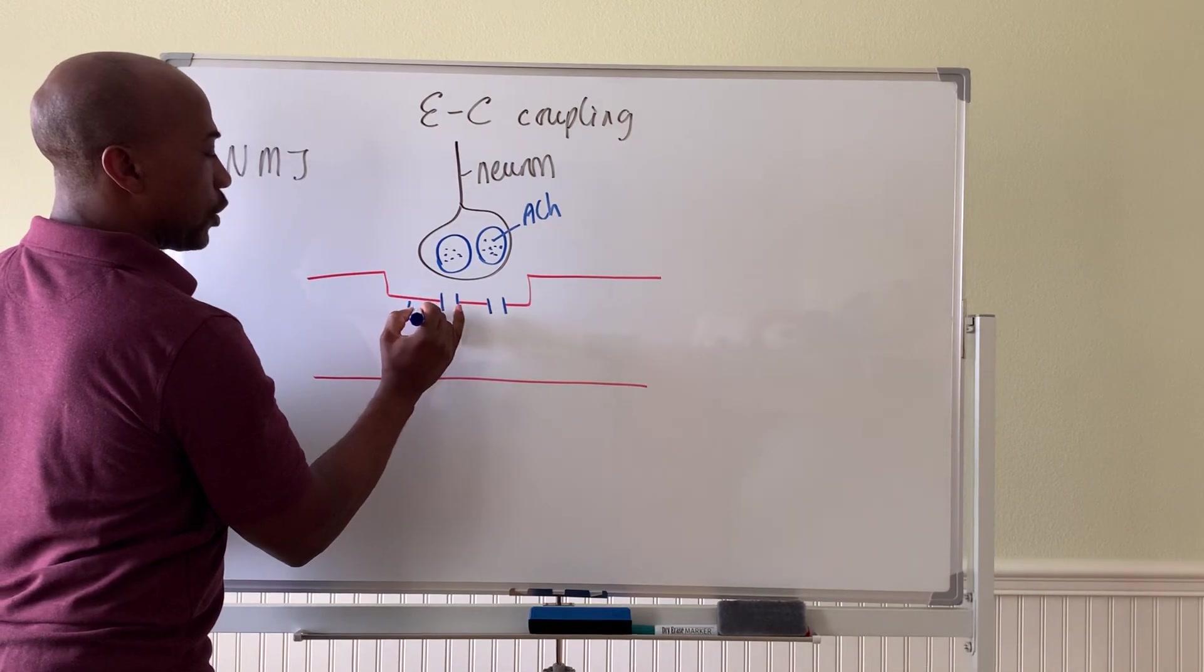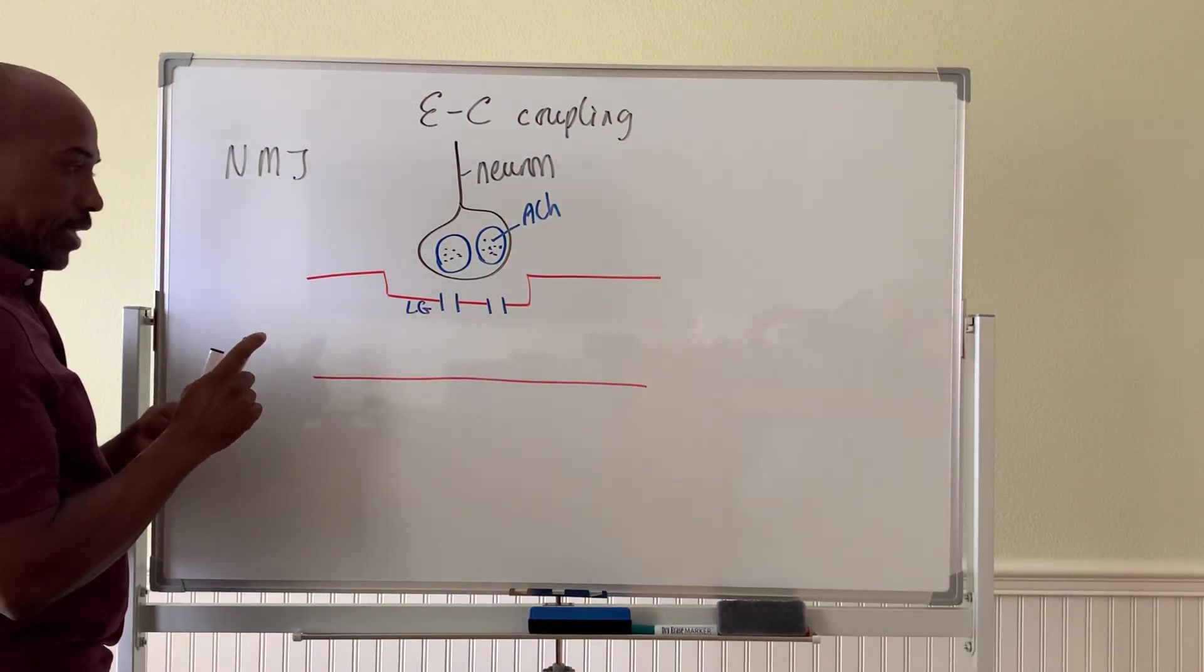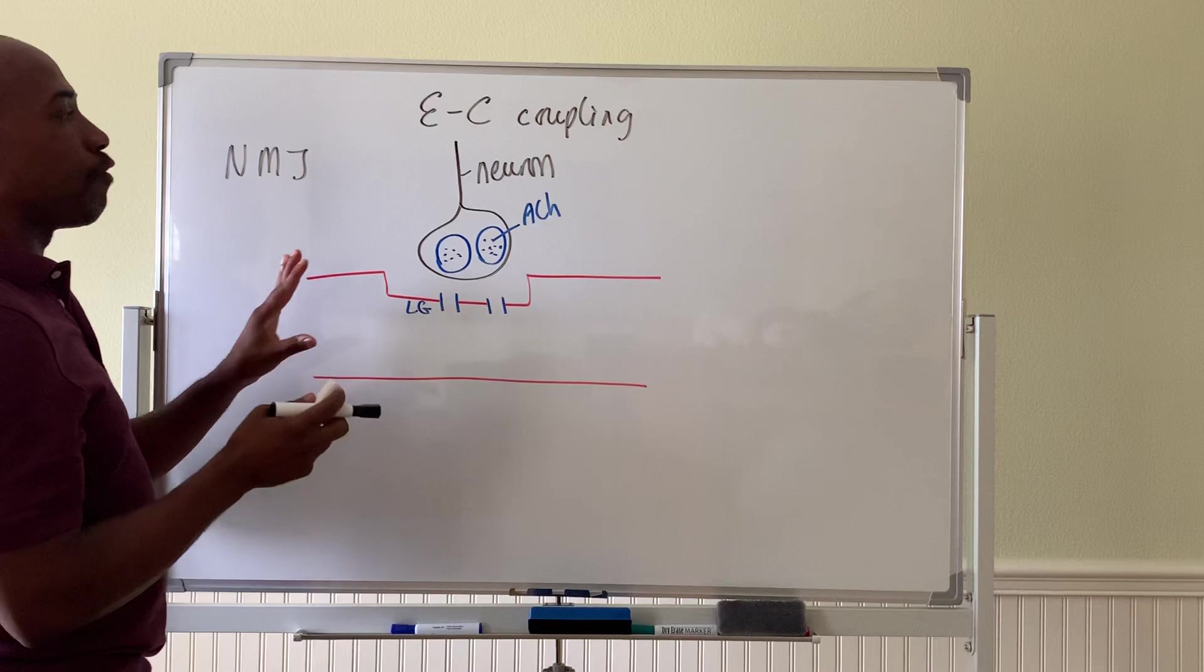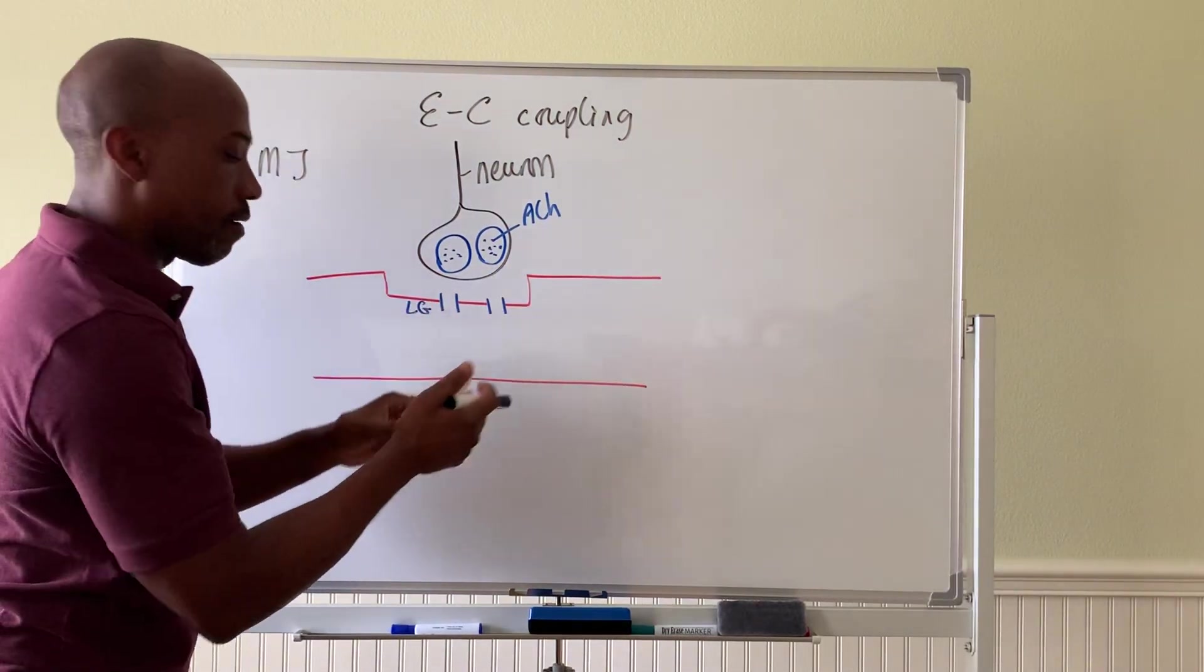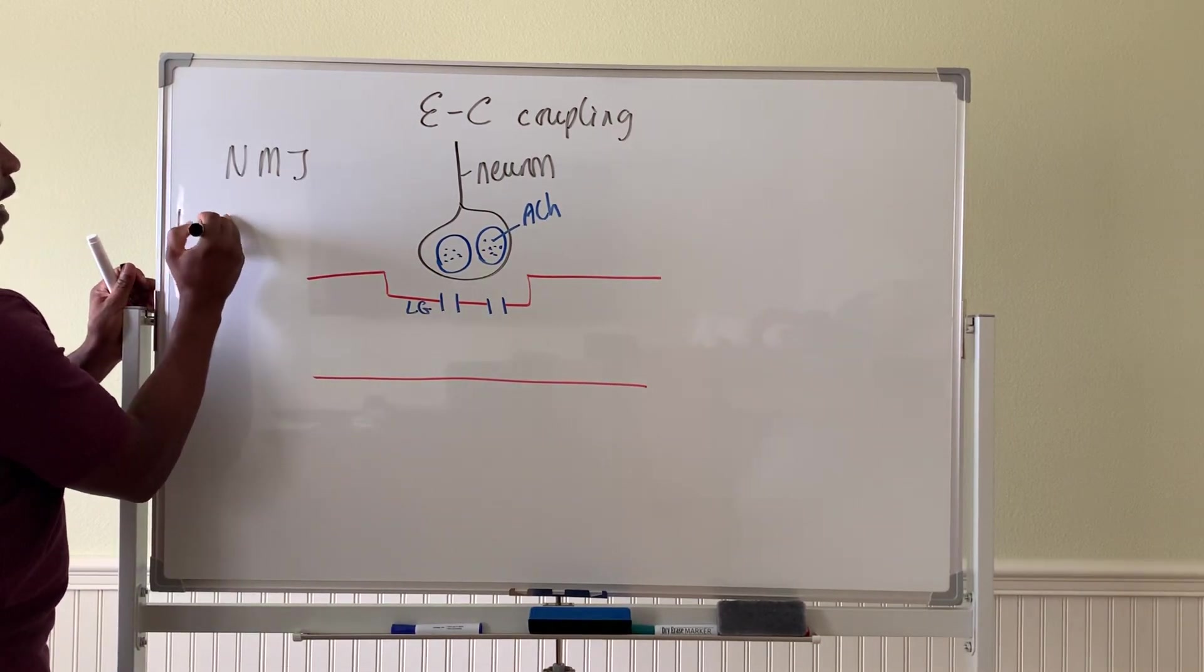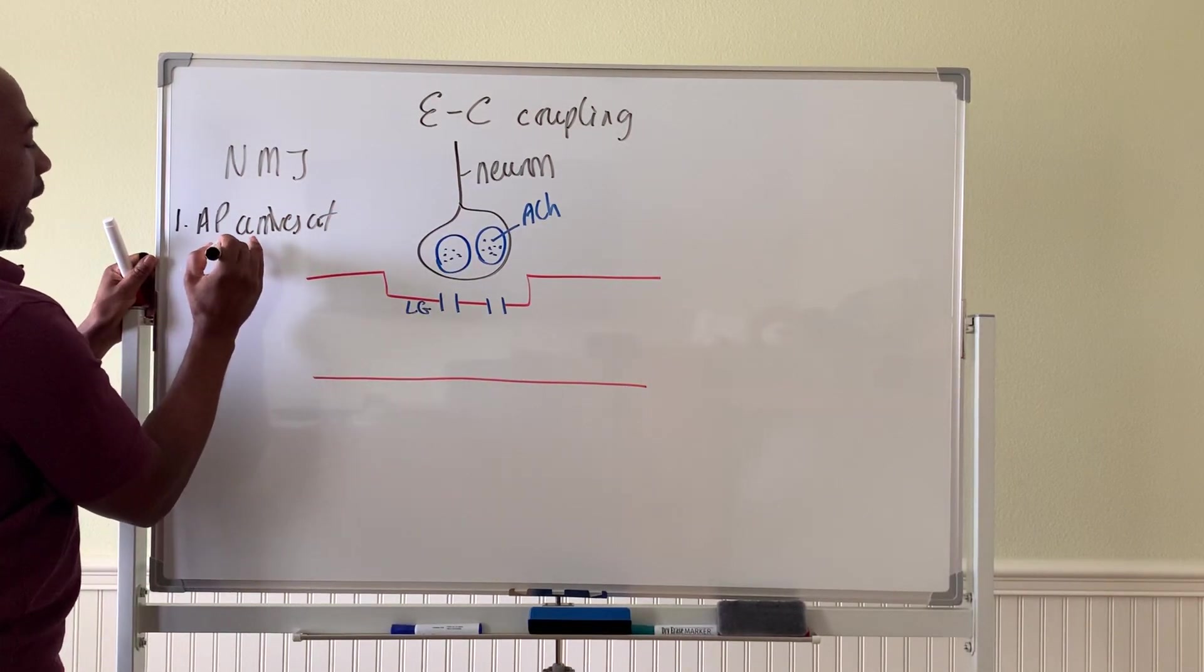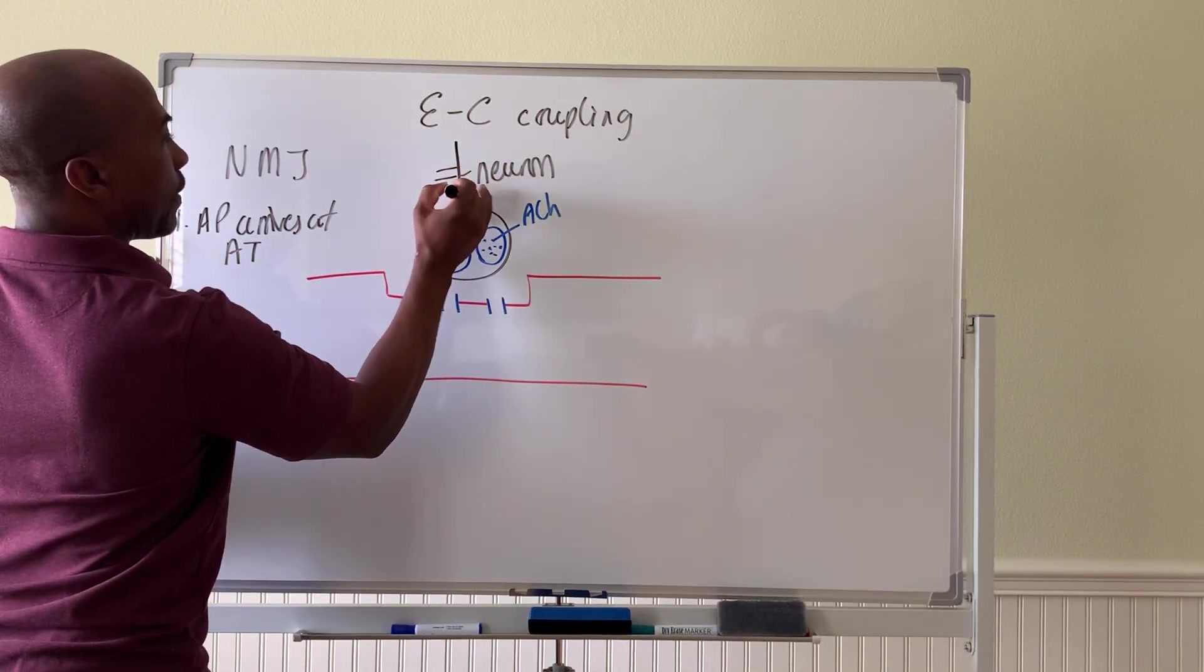These are ligand-gated channels that respond to ACH. So let's see what happens at the NMJ to allow for the neuron to cause the muscle cell to contract. Step one is the action potential arrives at the axon terminal.